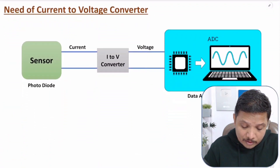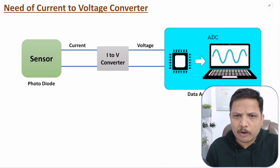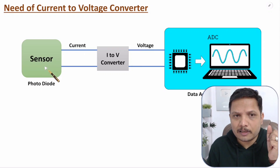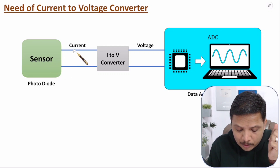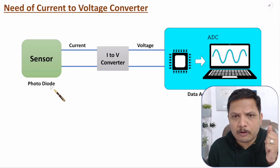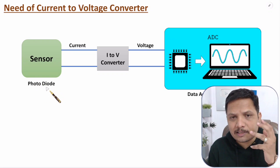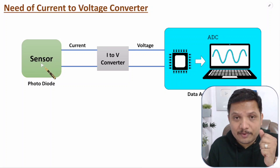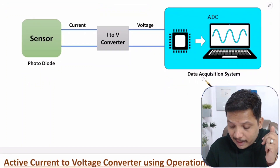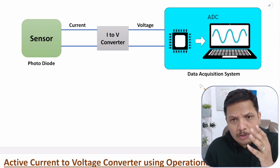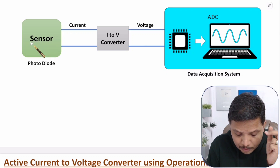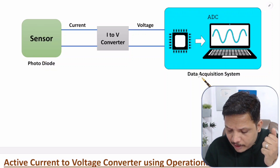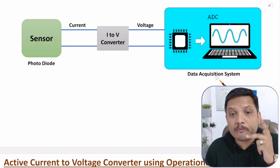Now you might be thinking: what is the need for it? When we talk about the need for a current-to-voltage converter, you will observe that in industries of instrumentation and control engineering we use many sensors. There are some sensors that give output in terms of current, like sensors based on photodiodes and phototransistors. These sensors generate output in terms of current, and this signal is delivered to a data acquisition system, which stores the data produced by sensors. To save that data, we need a voltage signal, because the majority of data acquisition systems store data in the form of voltage.